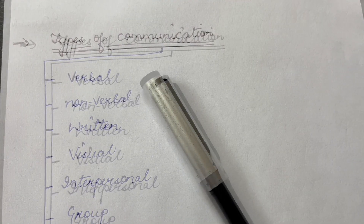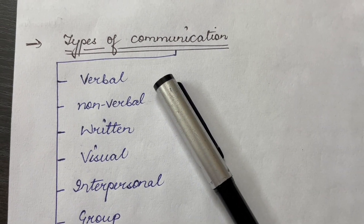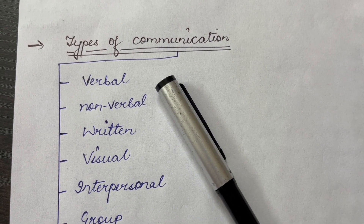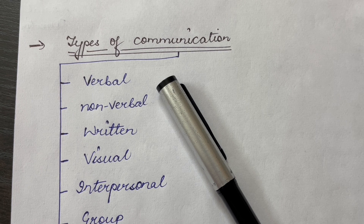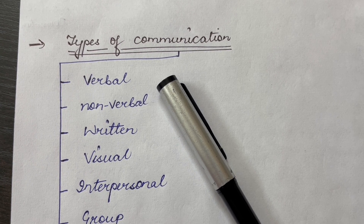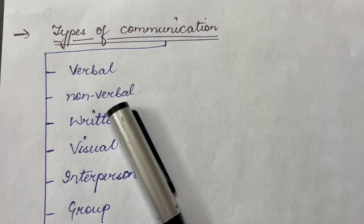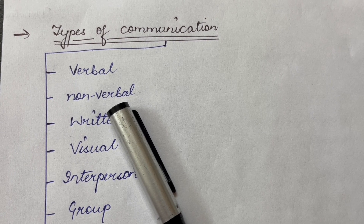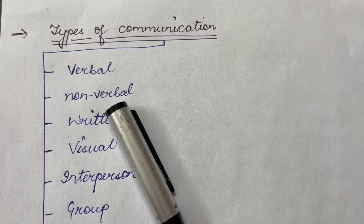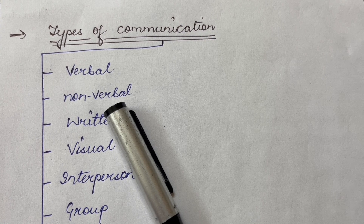We will learn in detail. First is verbal communication. This includes spoken words either face to face or over the phone. It's immediate and allows for instant feedback. Next is nonverbal communication. This involves conveying messages without the use of words such as through body language, facial expression, gestures and tone of voice.